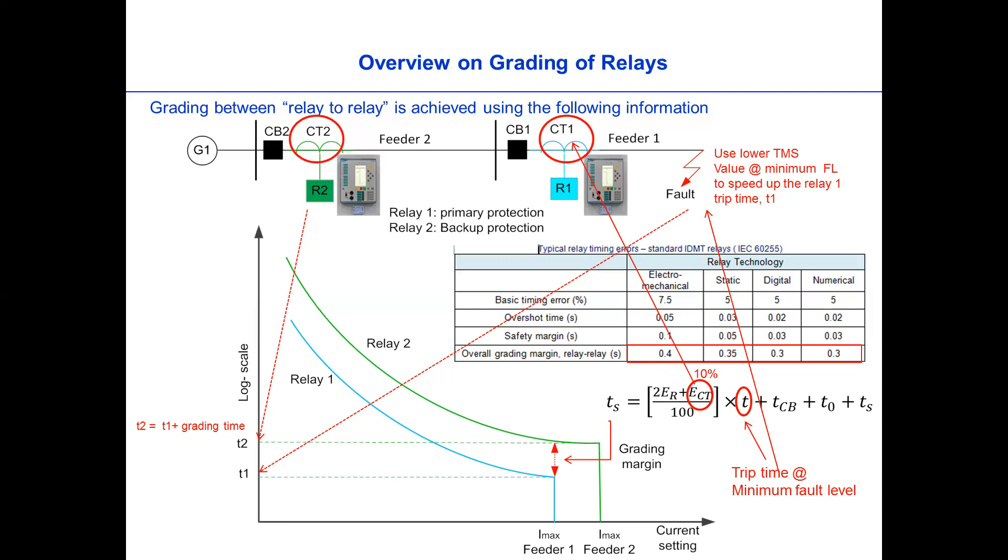So this is the information that we need to know. Once we know this one, then we can calculate what will be the trip time of the primary protection R1, and trip time of the backup protection which is R2, when fault is at different location. So thank you for this. Please follow the next video. Thank you.